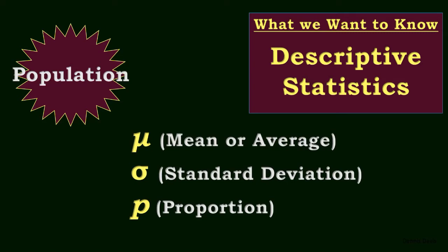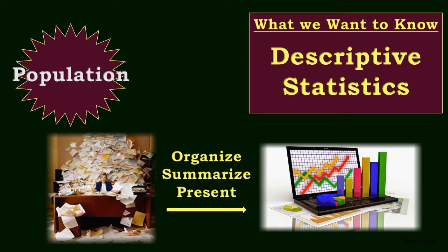Descriptive statistics is actually the science of organizing, summarizing, and presenting raw data in a readable and understandable form. So calculating the mean and standard deviation of a population is only part of what constitutes descriptive statistics, but it is an important part when it comes to what probability and statistics are all about.